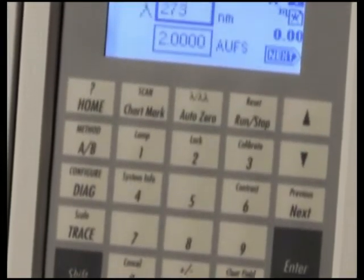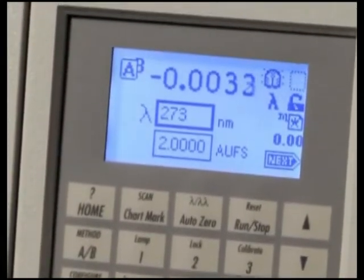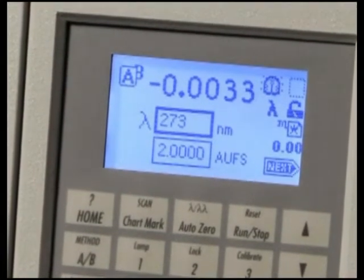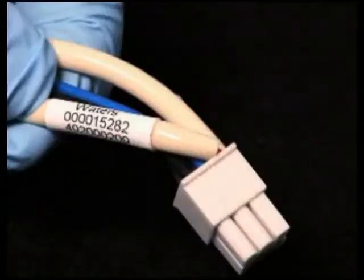The 2489 detector allows you to record and store the serial number and date of installation of a new lamp. Notice the lamp serial number is located on a label on the lamp wires. Make a note of the lamp serial number.